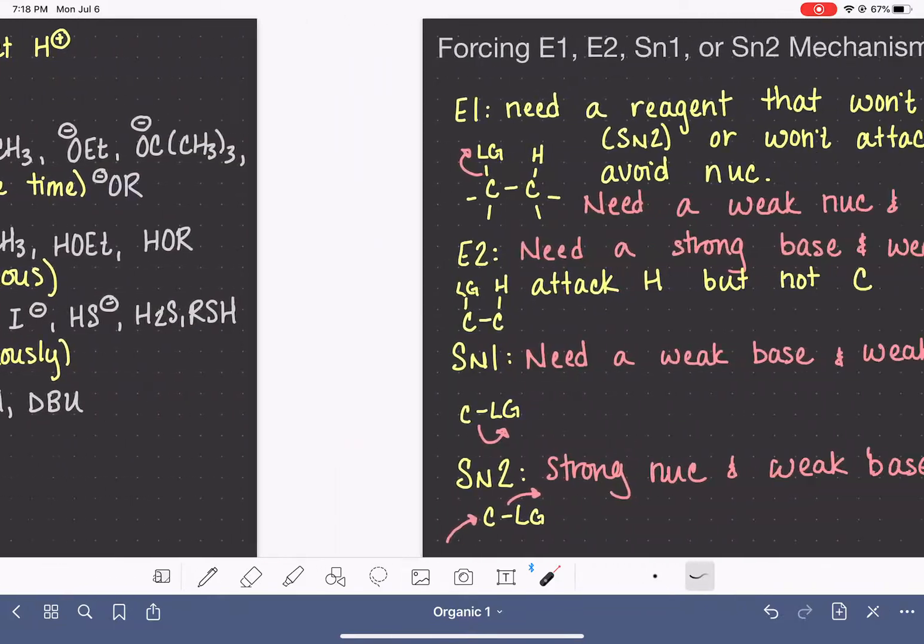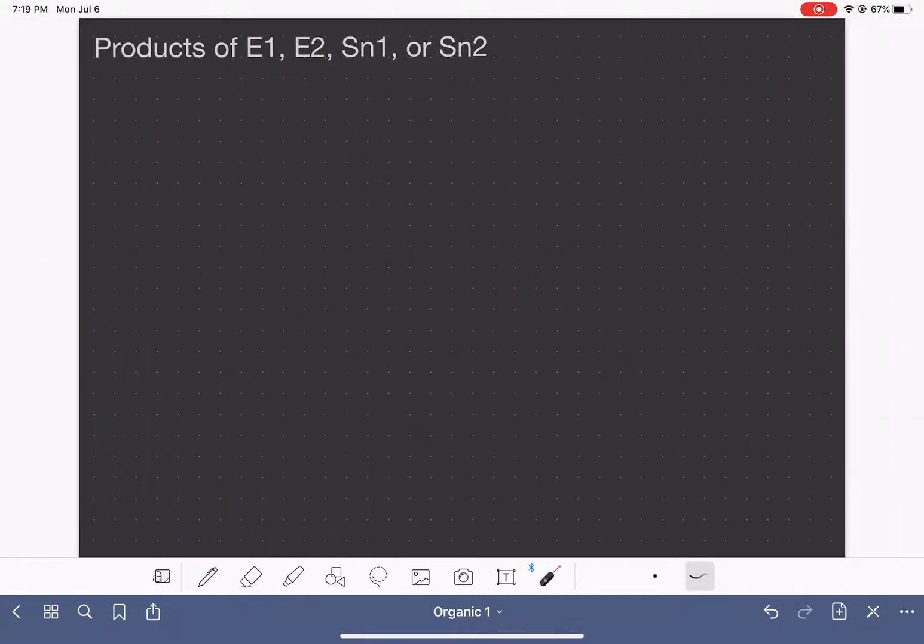And so let's do one more summary cheat sheet to help you remember the different types of products that are formed in each of these four mechanisms. And let's start with E1.